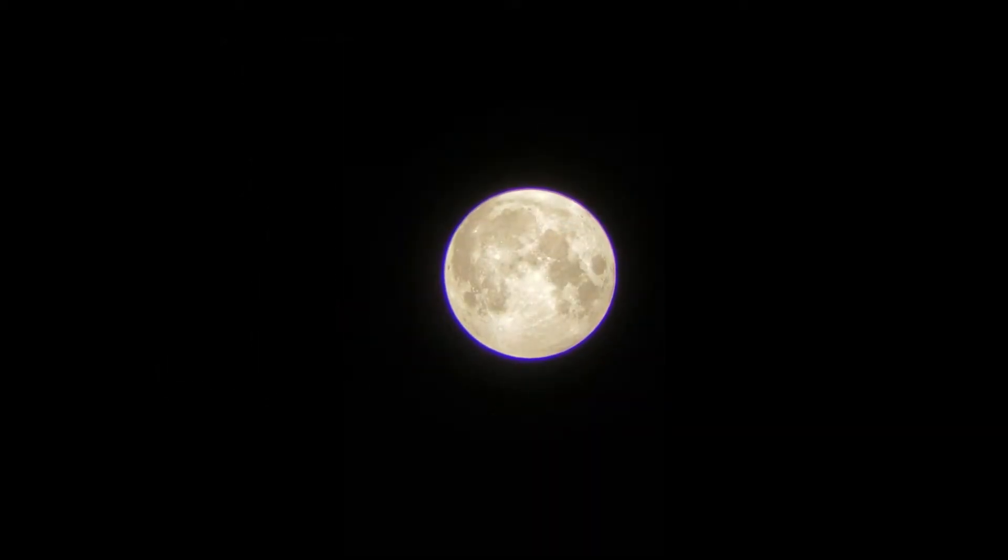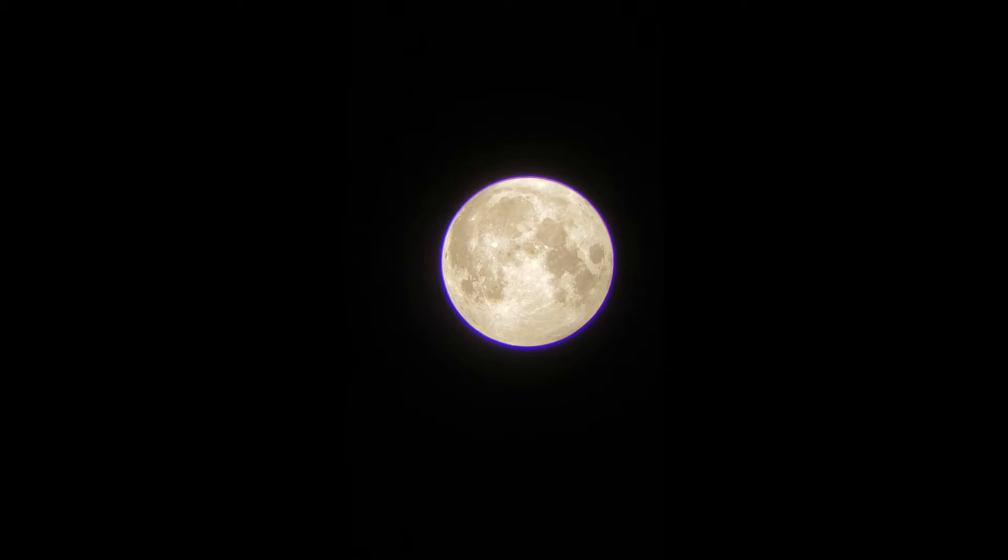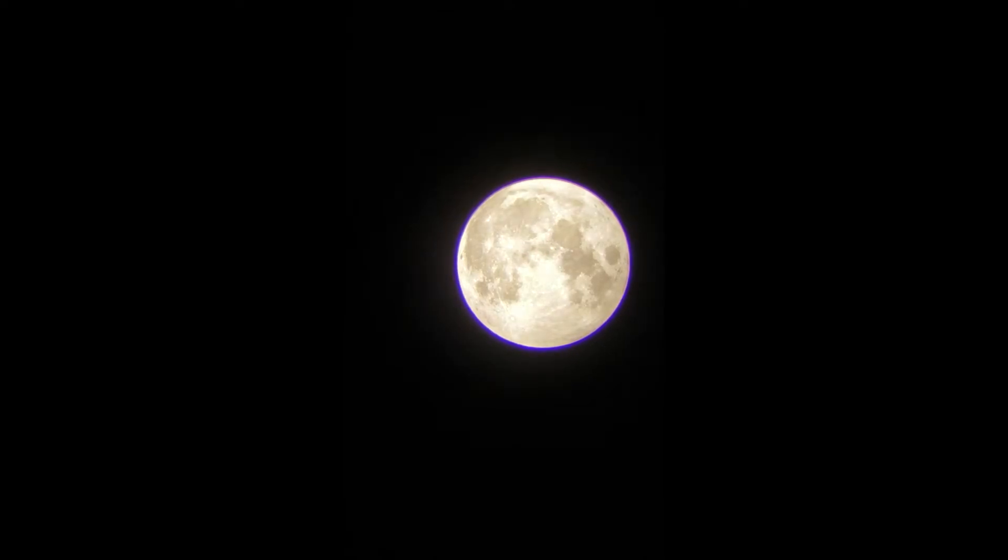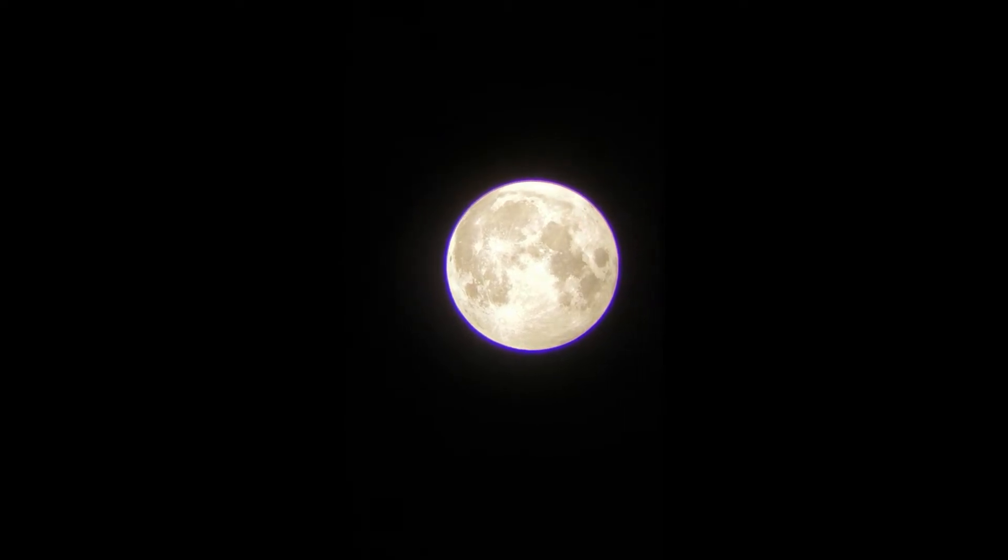This is a quick look at the full moon tonight. You might notice that blue fringing around the moon. That's because with this refractor telescope, it focuses the blue wavelength at a different point than it does red and green, so you get that blue coloration. It's not quite as visible when you're looking at the object through the telescope, but it does show up quite well when you're filming.